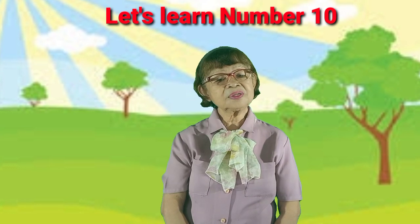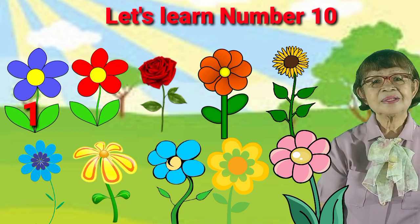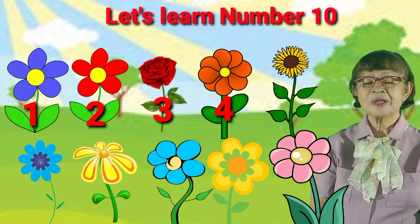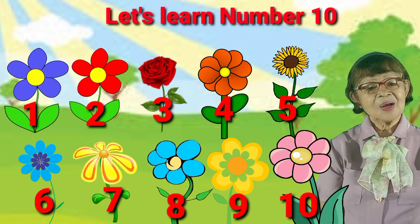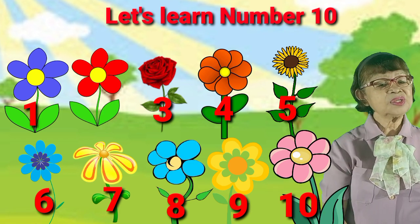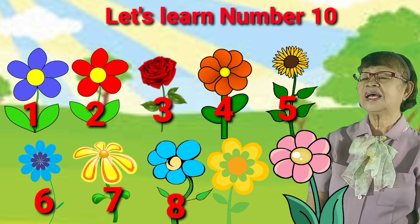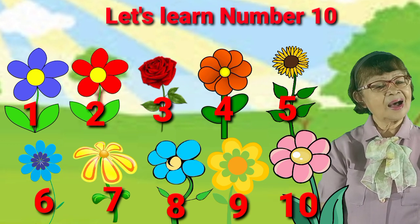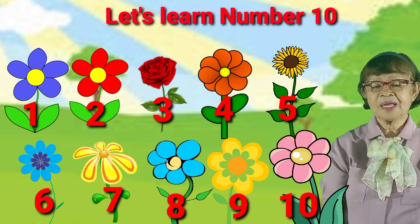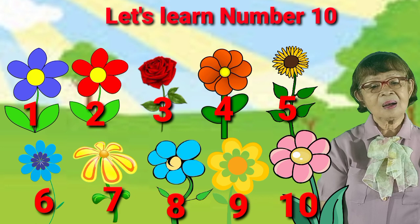Okay kids, this time we're going to learn our number 10. We are going to count 10 flowers in the garden. Let's count them all: 1, 2, 3, 4, 5, 6, 7, 8, 9, 10. How many flowers do we have in the garden? Yes, it is 10! We have 10 flowers in the garden. Now we go to color the set orange.